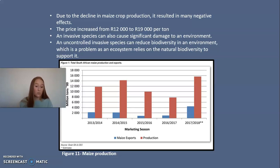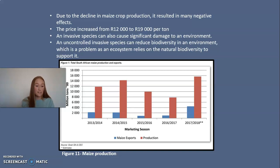An invasive species can also cause significant damage to an environment, as is evident from the impact that the fall army worm had on maize farms in South Africa. Without proper measures to eradicate a problem like this in the future, the extent of damage will increase. Research has shown that if nothing is done, the invasive species can spread faster through the environment, causing havoc.